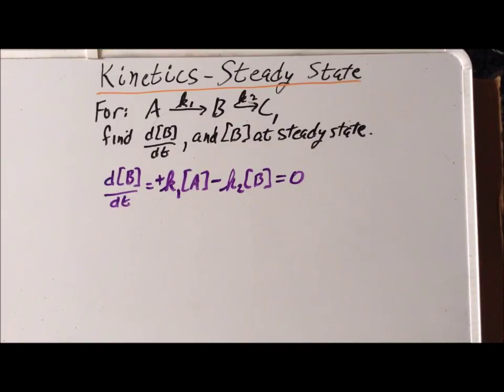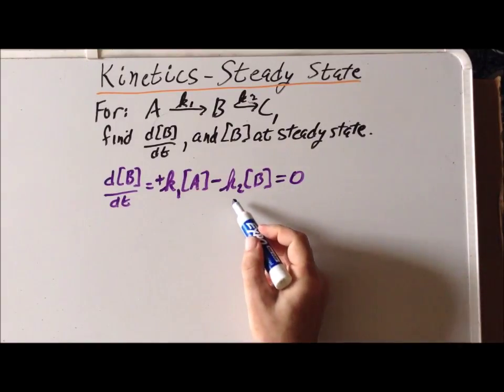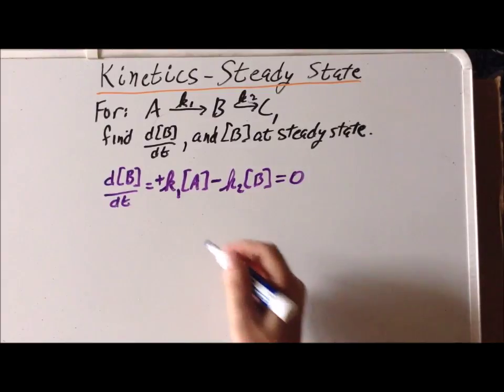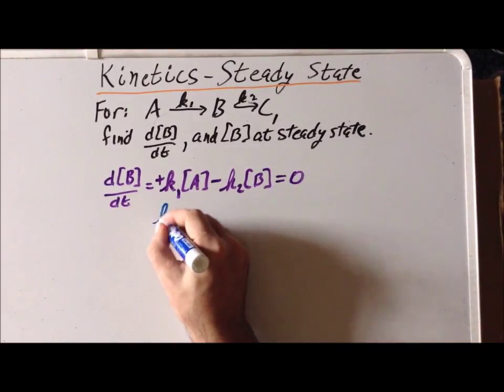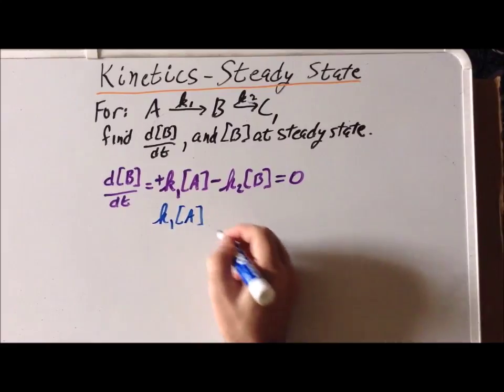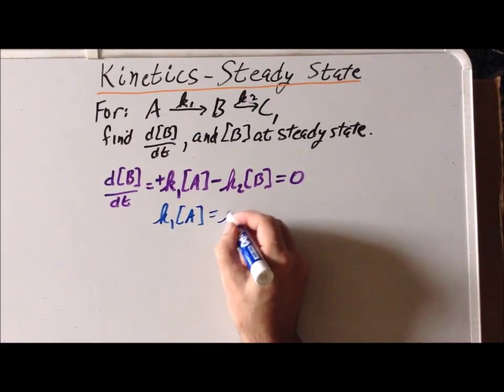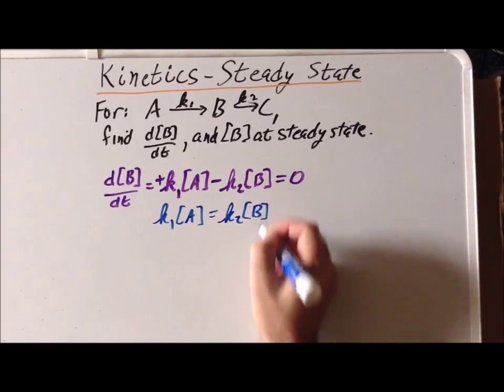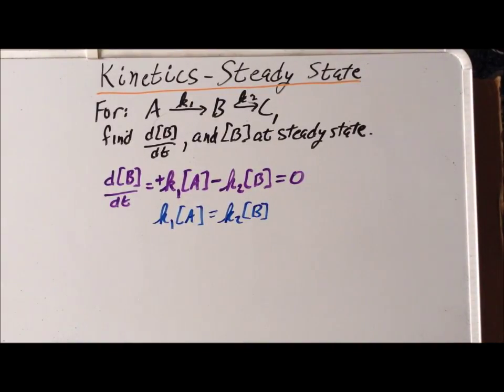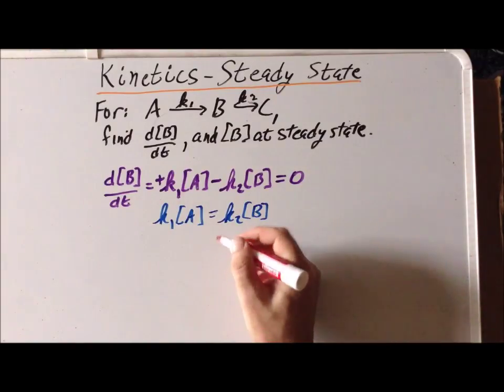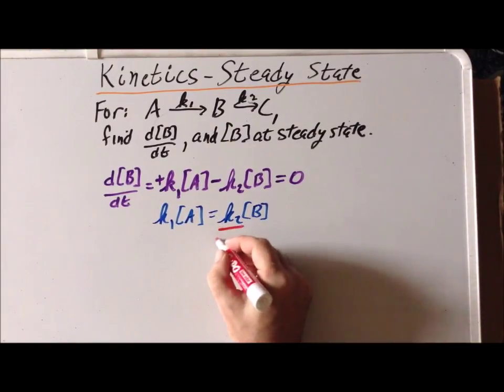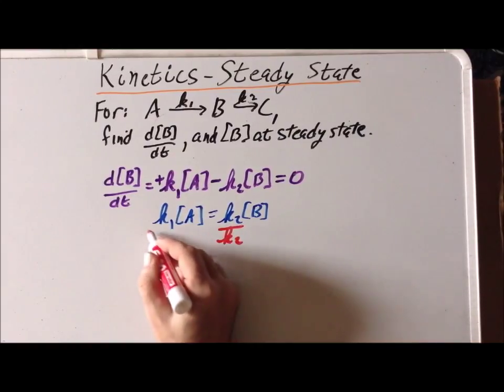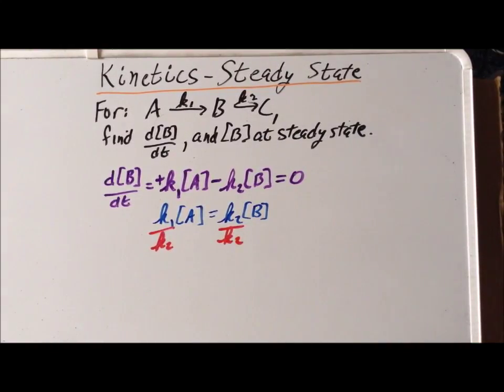Now that we have done that, we can add K2 times the concentration of B to each side, which gives us that K1 times the concentration of A is equal to K2 times the concentration of B. Now we divide each side by K2, which gives us almost immediately our expression for the concentration of B.